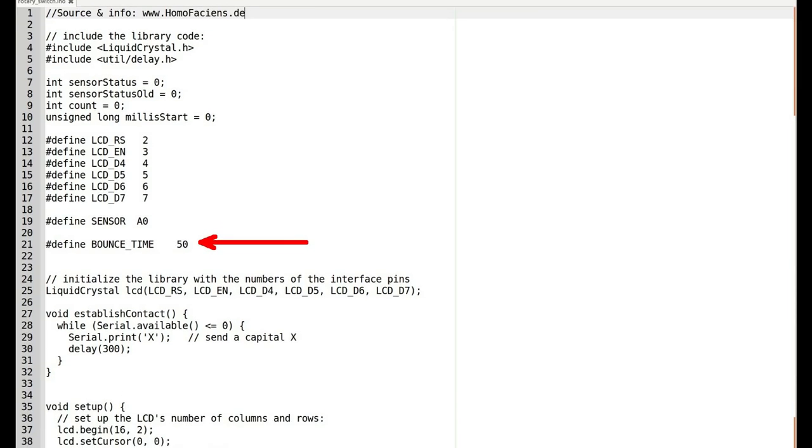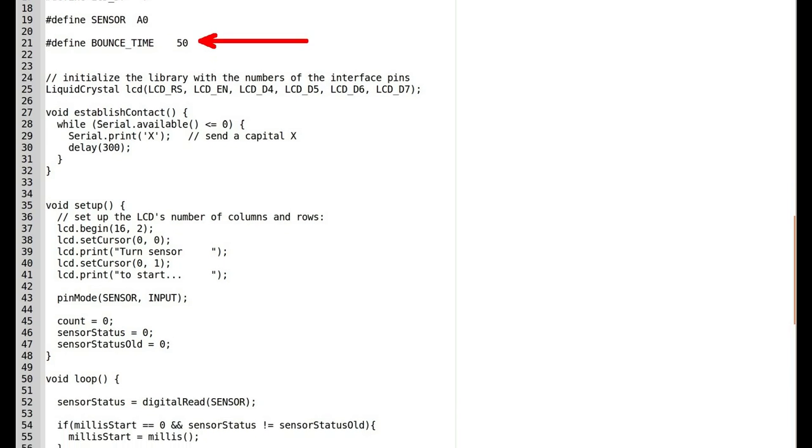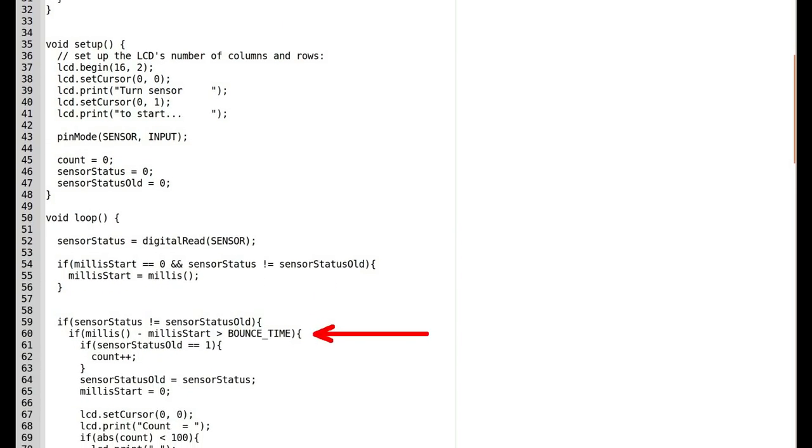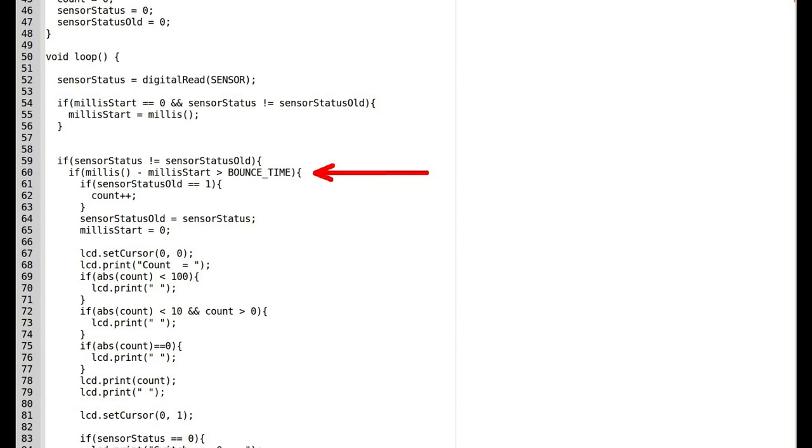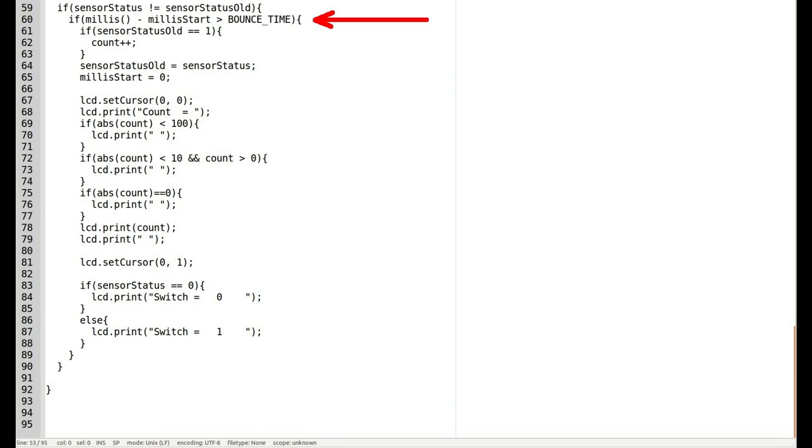By software we can prevent the microcontroller from treating each pulse caused by the unwanted switch bounces as a sensor event. Only if a signal lasts for at least 50ms, which is more than 10 times the duration of contact bounce, a transition from low to high or vice versa is treated as switch action.